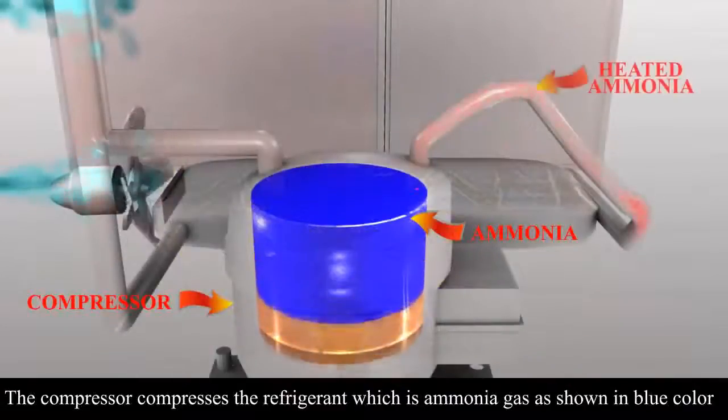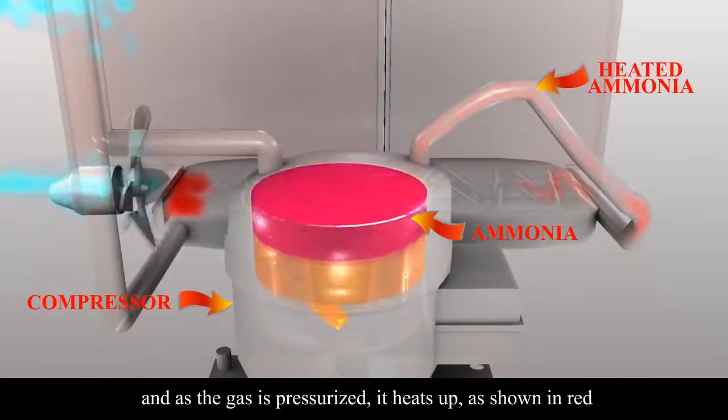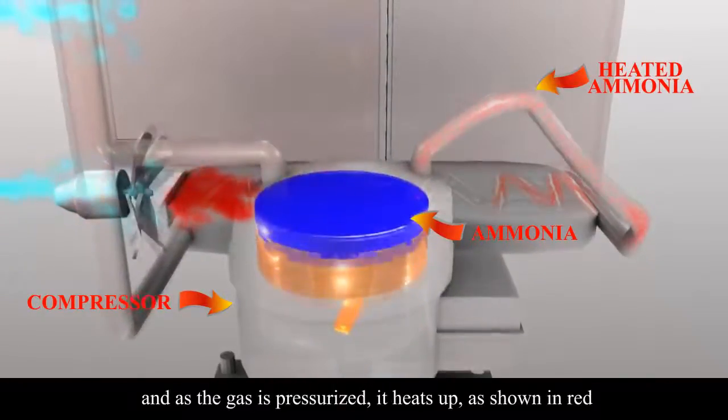The compressor compresses the refrigerant which is ammonia gas as shown in blue color, and as the gas is pressurized, it heats up as shown in red.